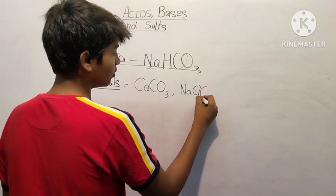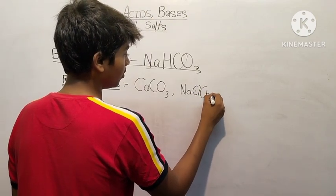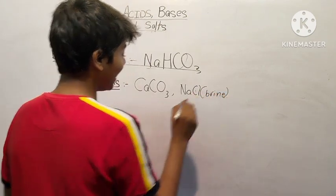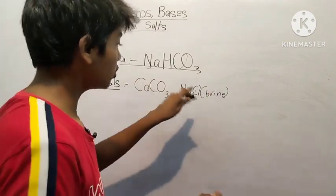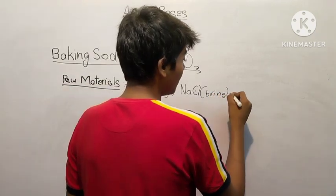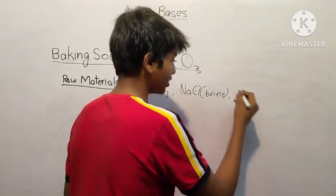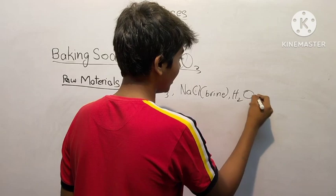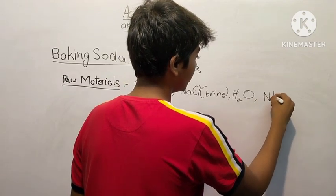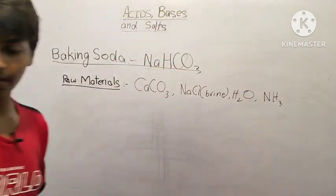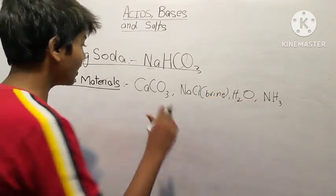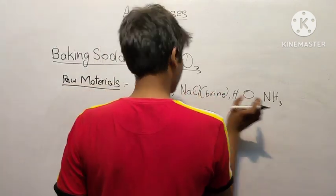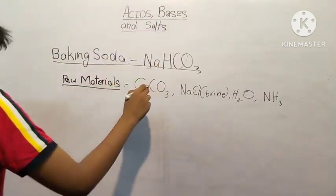Sodium chloride in the form of brine, which is a concentrated solution of NaCl. Then you need water H2O and you need ammonia NH3. So this is calcium carbonate, NaCl, ammonia, and water.